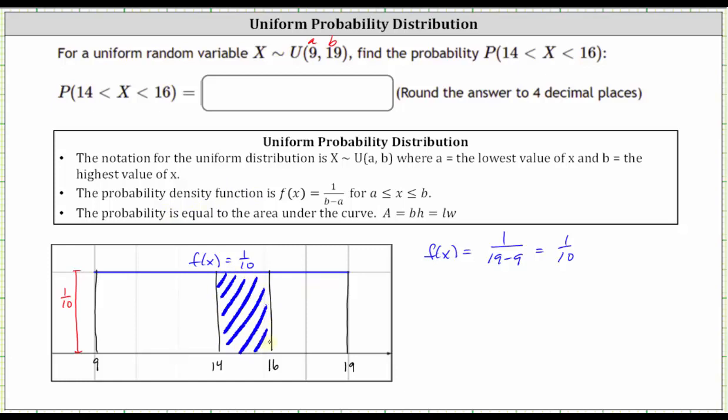And since we have a rectangle, we can find the area using the formula base times height. So the area is equal to the probability that X is greater than 14 and less than 16, which is equal to base times height because we have a uniform distribution. So in this case, the base is equal to 16 minus 14, and the height is always equal to 1/10, which gives us 2/10 or 1/5.